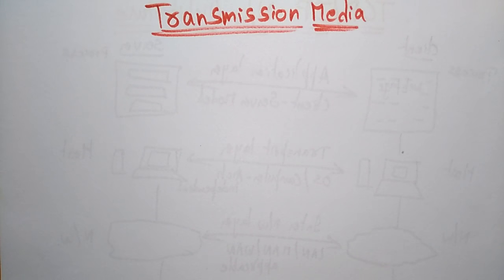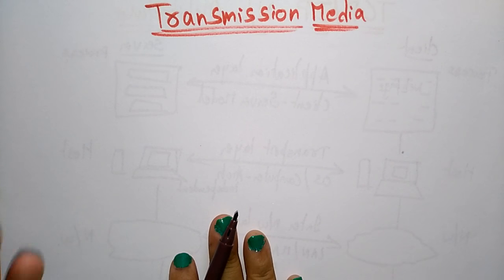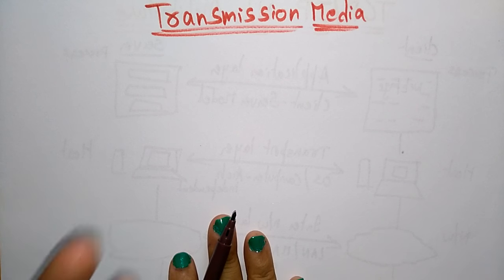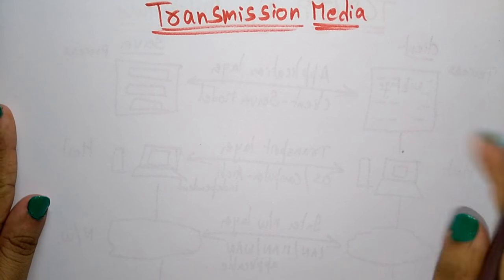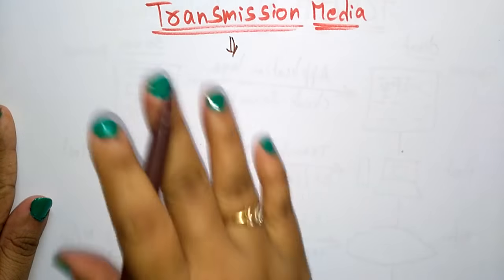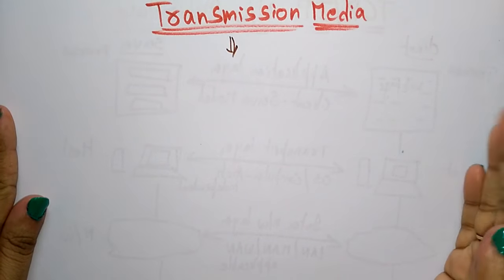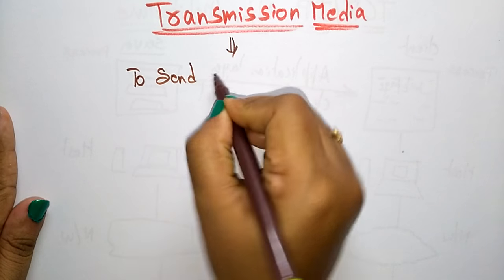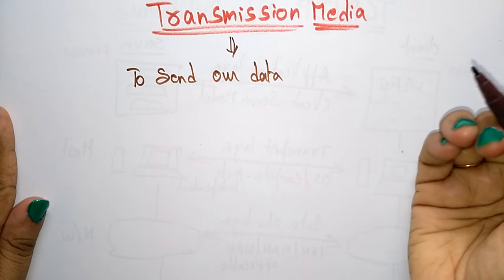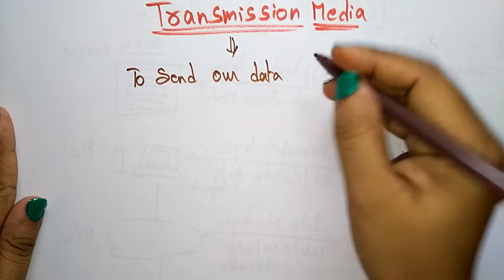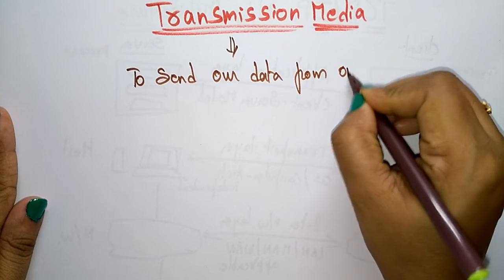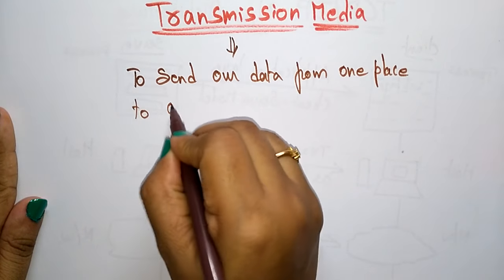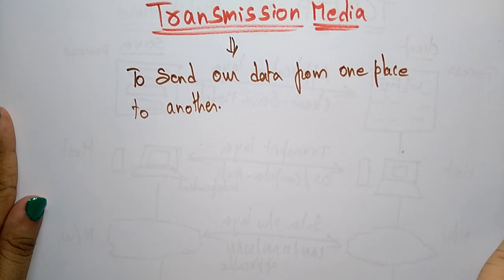Coming to the next topic in computer networks: transmission media. This is one of the important topics, so we need to know how data is transmitted from one system to another — whether wired or wireless. Transmission media is a means through which we send our data from one place to another. Data may be of any type — voice, message, or whatever it may be.